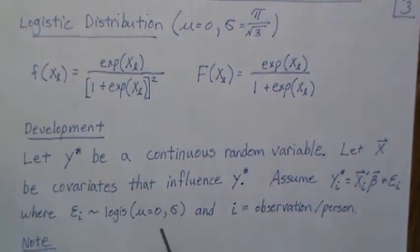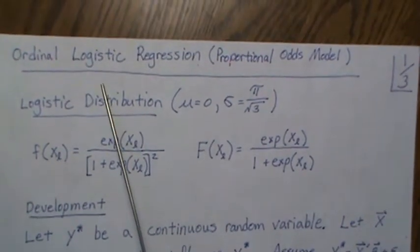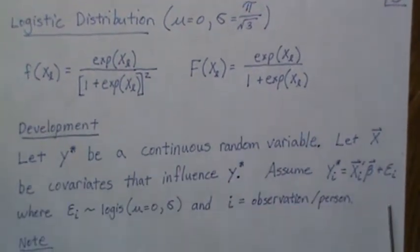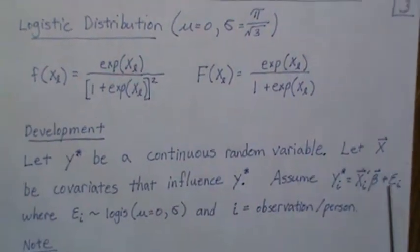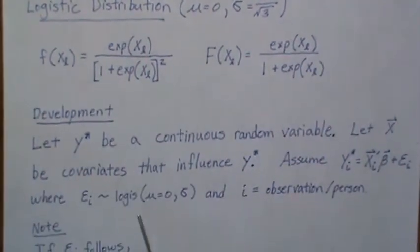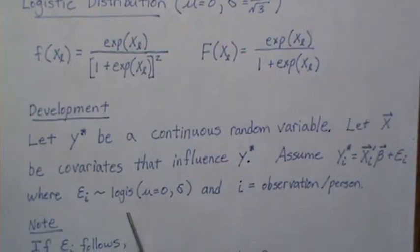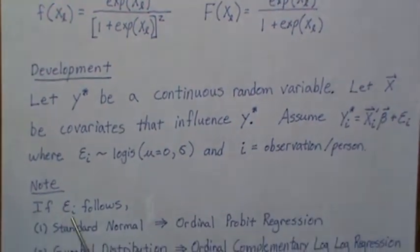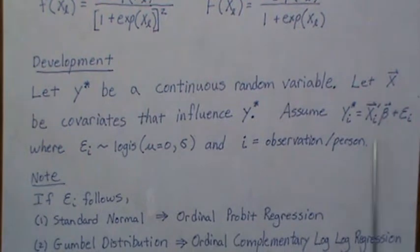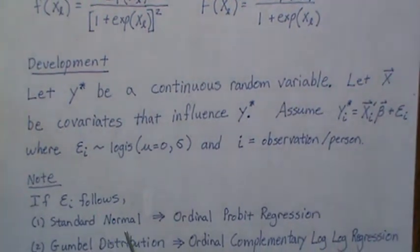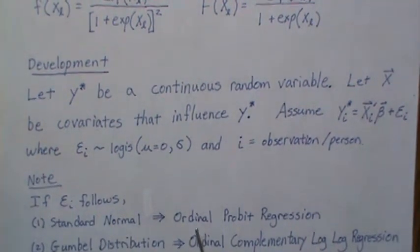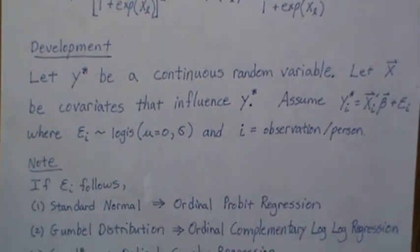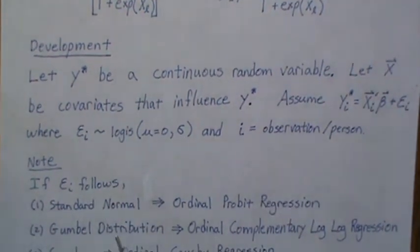Now why is it called logistic regression? Because we assume this error term follows a logistic distribution. Now what if our epsilon followed a standard normal distribution? Well then we'd call this ordinal probit regression.